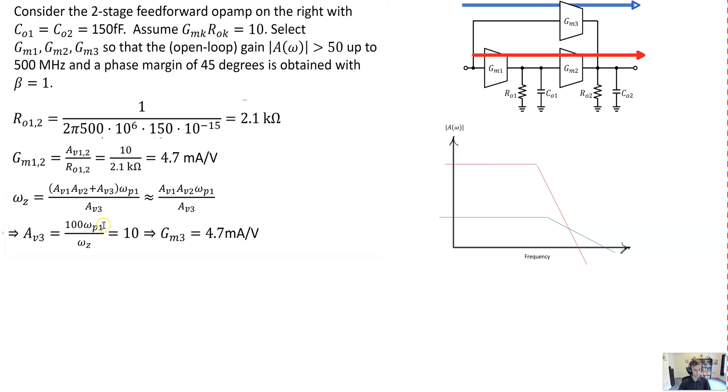So specifically, we see that AV3, that's the gain GM3 times RO2, has to also equal 10. That means GM3 is just going to be the same as GM2. So what we end up with is a situation really where the zero kicks in right at the gain crossover frequency, something like this. And that's going to give us the extra 45 degrees phase shift.